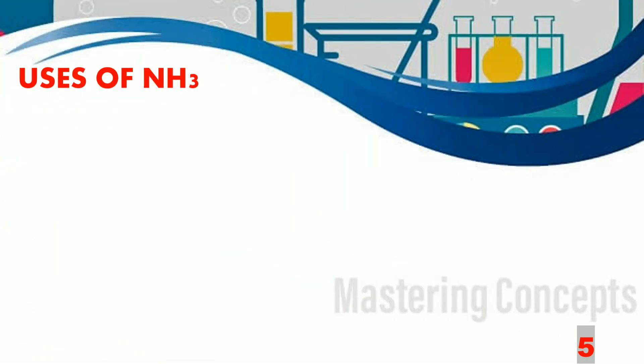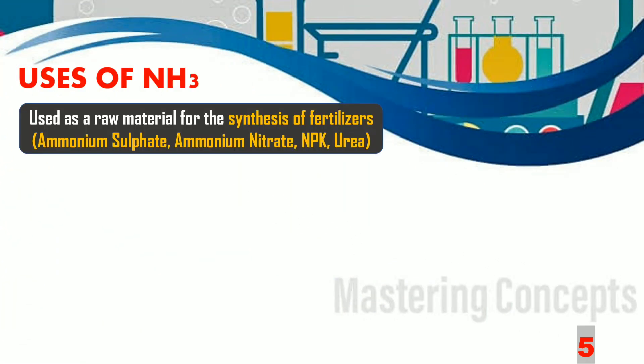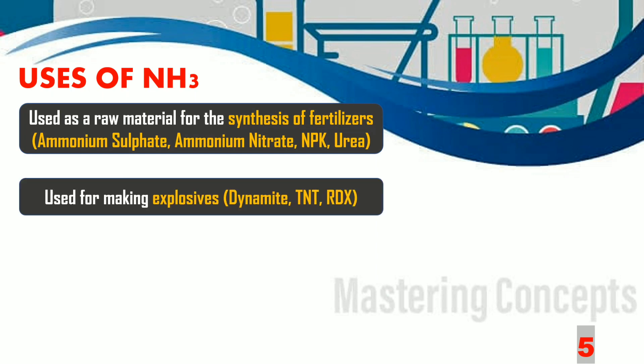Let us now talk about the uses of ammonia. Ammonia gas is used as a raw material for the synthesis of fertilizers like ammonium sulphate, ammonium nitrate, NPK, and urea. It is also used for making explosives like dynamite, TNT, and RDX.